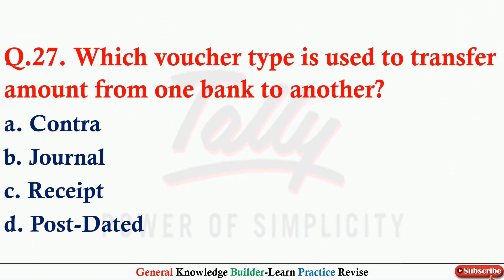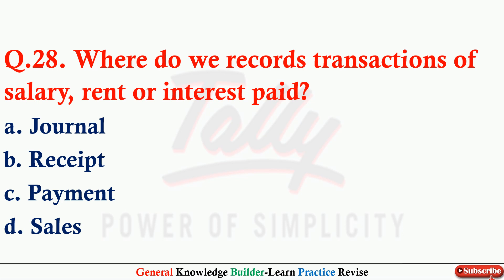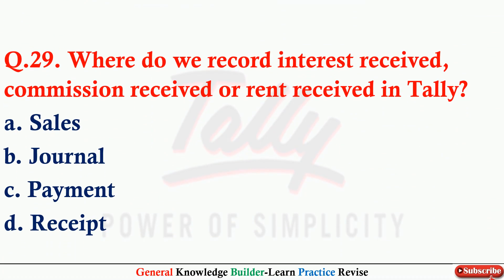Q27: Which voucher type is used to transfer an amount from one bank to another? Option A: Contra. Q28: Where do we record transactions of salary, rent, or interest? Option C: Payment. Q29: Where do we record interest received, commission received, or rent received in Tally? Option D: Receipt.